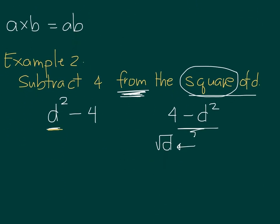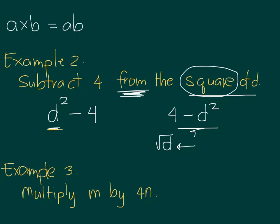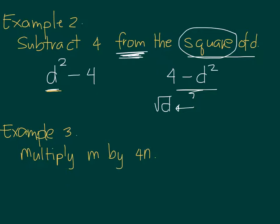Now let's look at another example. Example 3: Suppose I want to multiply M by 4N. So we have the word multiply, we expect a multiplication sign. And what we want to multiply is M and 4N. So initially, we understand this as M times 4N. But we said multiplication can just be as simple as M times 4N, or we can even make this 4MN.